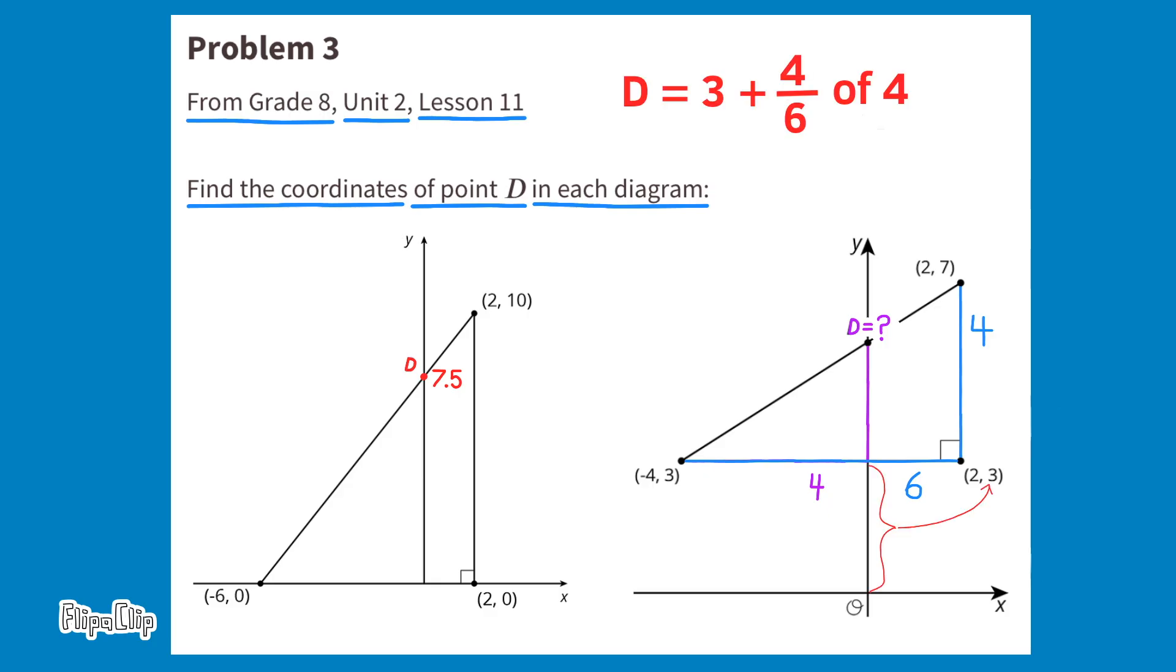To account for the space between the x axis and the triangle's base, I wrote this equation. D equals 3 plus 4 sixths of 4, or 3 plus 2 thirds of 4, which means 3 plus 2 thirds times 4, or 3 plus 2 thirds times 4 over 1, which is 8 over 3 times 1. D equals 3 plus 8 thirds. 8 thirds is equivalent to 2 and 2 thirds, and 3 plus 2 and 2 thirds is 5 and 2 thirds. So D equals 5 and 2 thirds. It's not really D equals 5 and 2 thirds. It's the Y value for point D equals 5 and 2 thirds. So the X value is 0, and the Y value is 5 and 2 thirds.